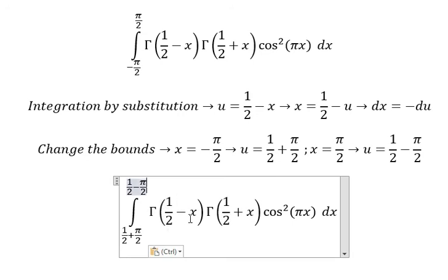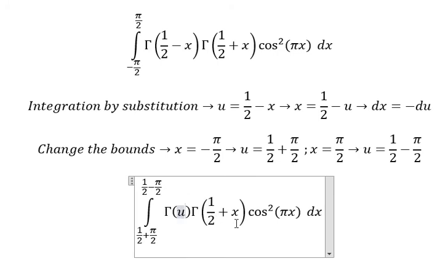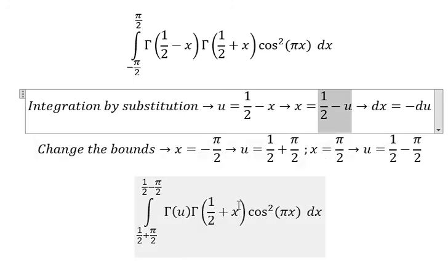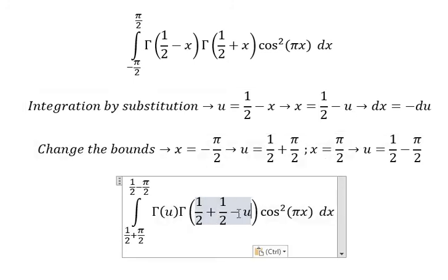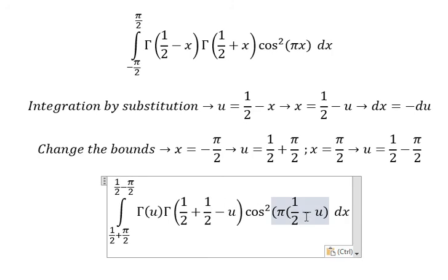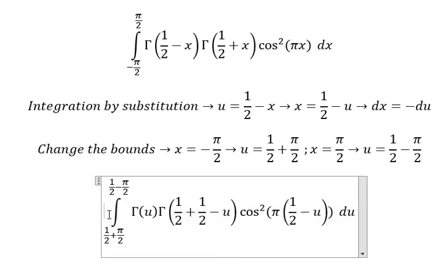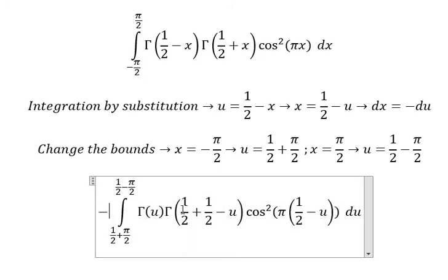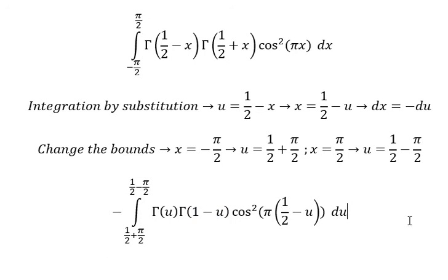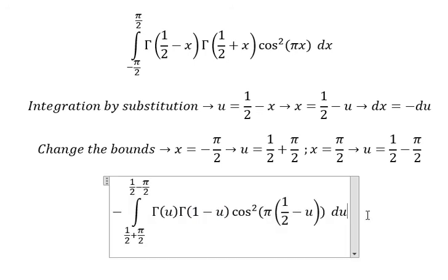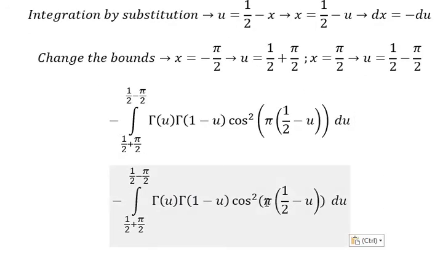The term negative 1 over 2 minus x we change for u, and 1 over 2 plus x we substitute in here. dx we change for negative du, and this term becomes 1 minus u. Now we have b multiplied with 1 over 2 and u.